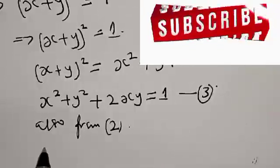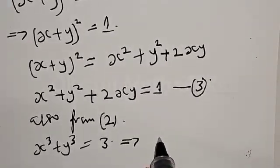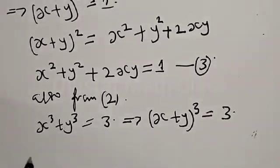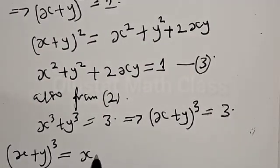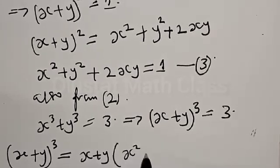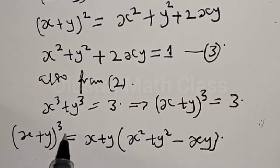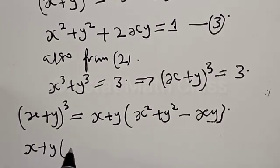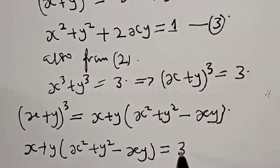Also, from equation 2, s cubed plus y cubed equals 3. Now, s plus y all raised to power 3 can be expressed as s plus y, multiplied by s squared plus y squared minus sy. Therefore, equation 2 can be rewritten as s plus y, times s squared plus y squared minus sy, equal to 3.